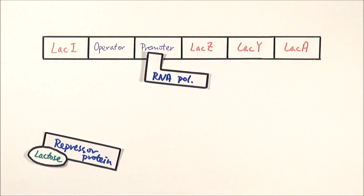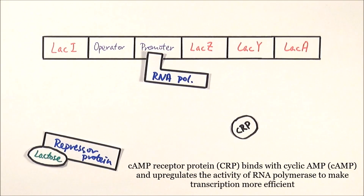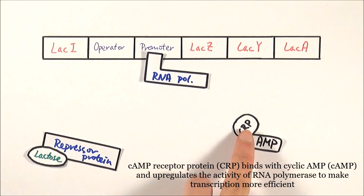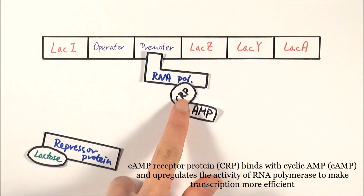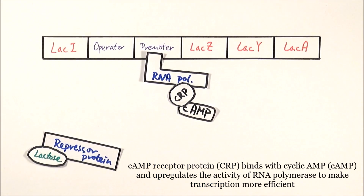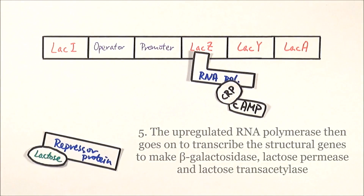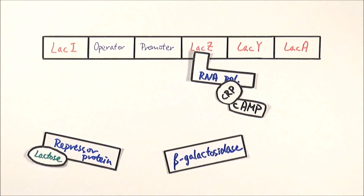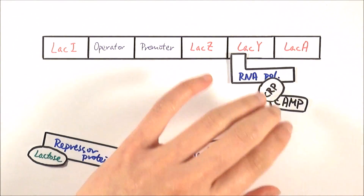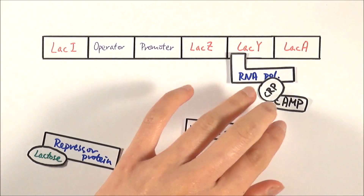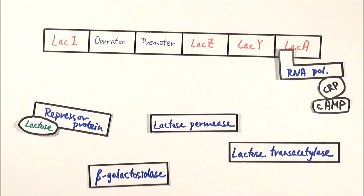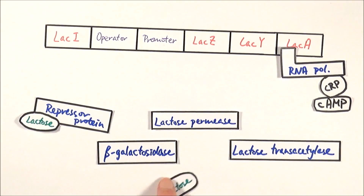Apart from RNA polymerase being able to bind, we can also make the process even more efficient. The CAMP receptor protein (CRP) is activated through the binding of cAMP, forming a complex. This complex then binds to RNA polymerase and upregulates transcription of the structural genes. This whole complex moves along to transcribe the genes: when it reaches LAC-Z, it makes beta-galactosidase; moving further along, it makes lactose permease; and then it makes lactose transacetylase. These three enzymes then metabolize lactose and use it in respiration to release energy.